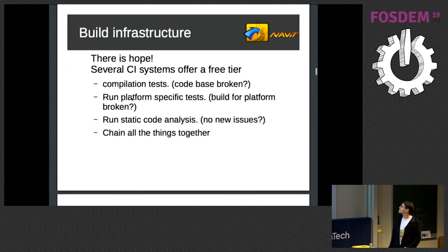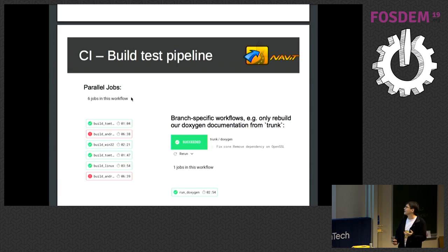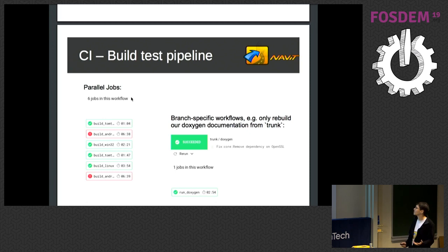Of course, you can chain all of this together, and that's what we are actually doing. In our case, we use CircleCI — those screenshots are from CircleCI. The nice thing is you can run jobs in parallel depending on how many workers are available. You can see here, for example, the Android platform for some reason failed, but TomTom, Windows 32, and Linux are still running perfectly fine — the build at least.